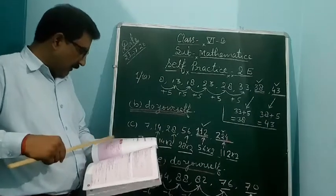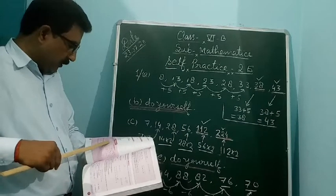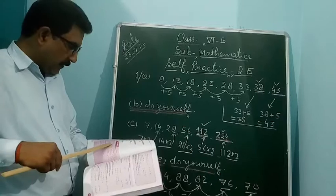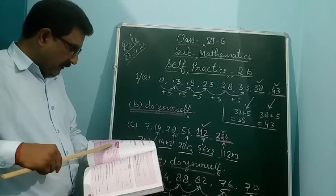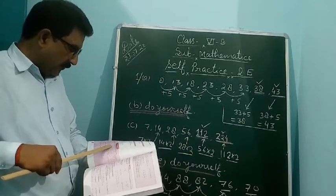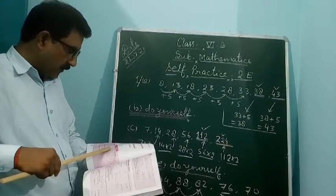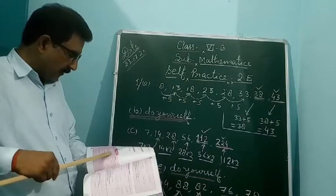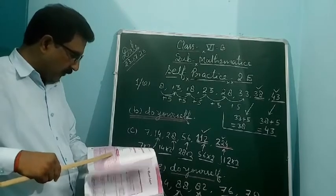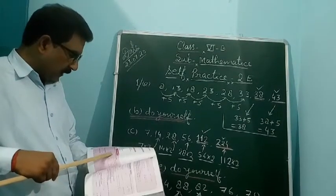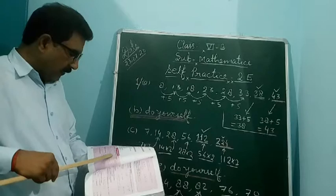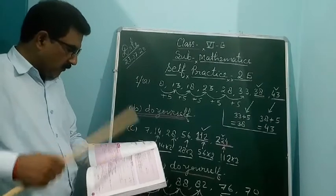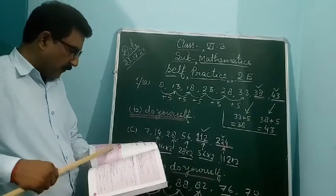Question E is also very simple: 5, 10, 15, 20. The number is increasing by 5. So: 5 plus 5 is 10, 10 plus 5 is 15, 15 plus 5 is 20, 20 plus 5 is 25, and 25 plus 5 is 30. So you can fill in 25 and 30.